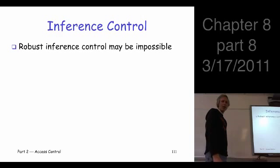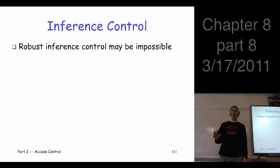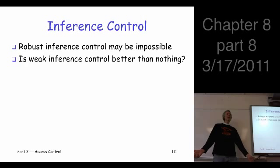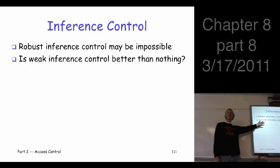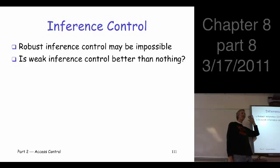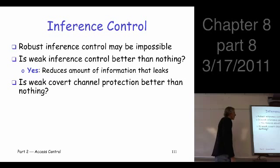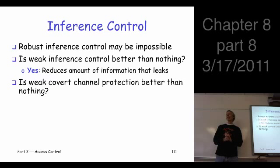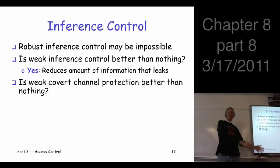So suppose robust inference control — really strong inference control — is impossible. The question is: is it worth it? Should we do something weak, or just do nothing at all — just let anybody access anything? Is it better to do something or to do nothing? Of course it's better to do something. What have you lost? You've just made the attacker's job more difficult, and it's not that much harder to build in these protections. So of course it's better to do something. How about covert channels? Covert channel protection can't be made perfect — there will always be a covert channel. But is it worth doing something to make covert channels harder to exploit and lower their capacity? Yes, of course you've got to do something.